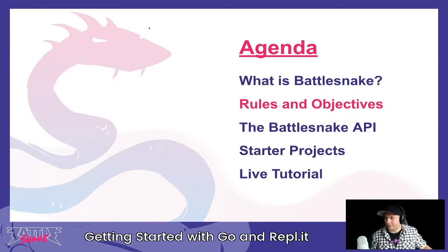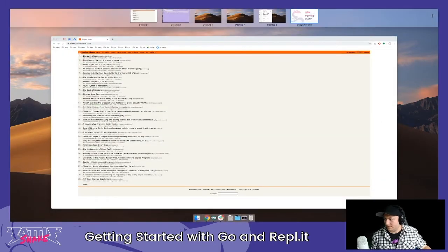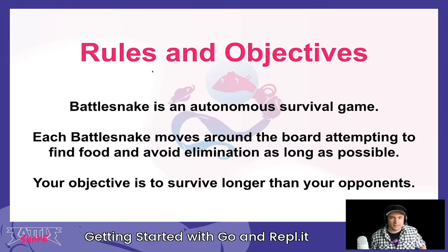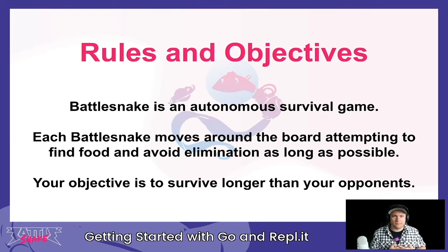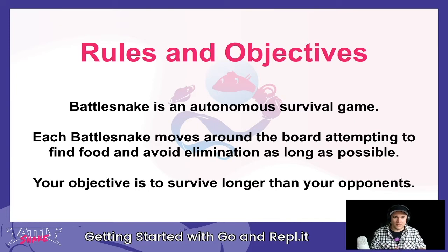Let's talk about the rules and objectives of the game. BattleSnake is played autonomously — you're writing code to power your snake. At its core, it's an autonomous survival game. The goal is to survive longer than your opponents. It's multiplayer: you control one BattleSnake on the board, but there are other BattleSnakes controlled by other people's code. Your job is to outmaneuver, outstrategize, and ultimately outlast them.